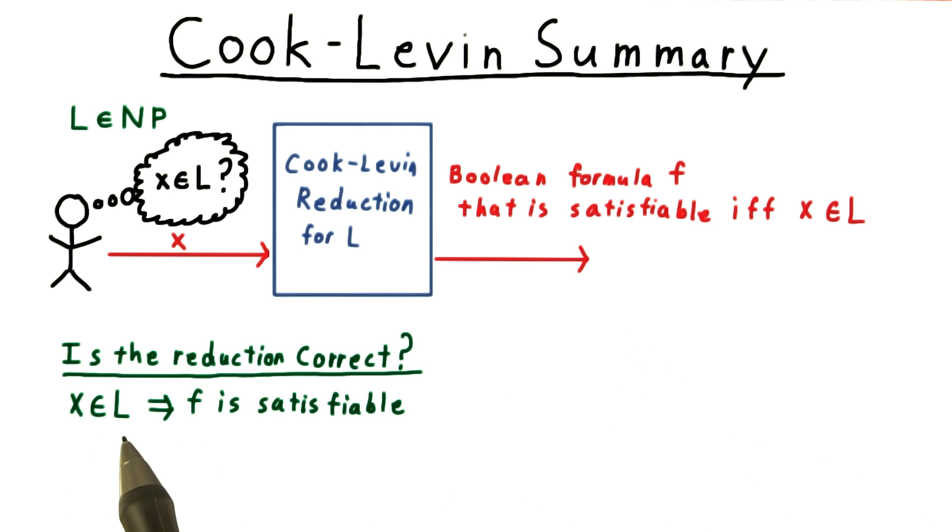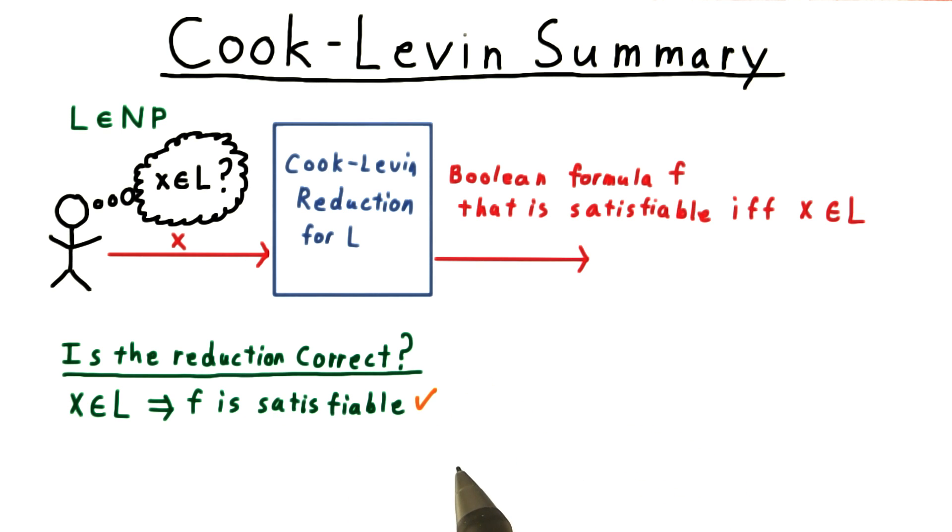If x is in the language, then clearly the output formula is satisfiable. We can just use the truth assignment that corresponds to an accepting computation of the non-deterministic Turing machine that accepts x. That will satisfy the formula f. That much is certainly true.